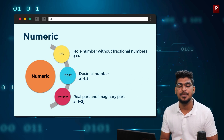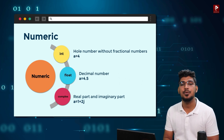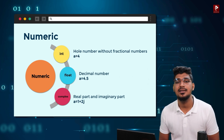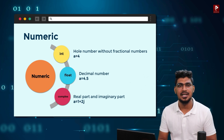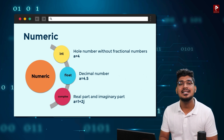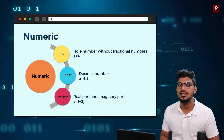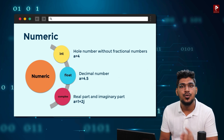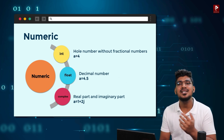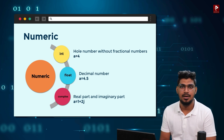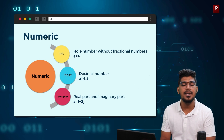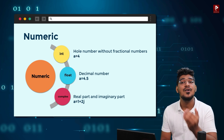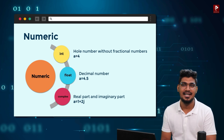Next, Float. Float number — that is called a decimal number. That means it is not a whole number, it is a decimal number. For example, A is equal to 4.5. That means a float number. A is the variable, 4.5 is the value. That is a float data type.